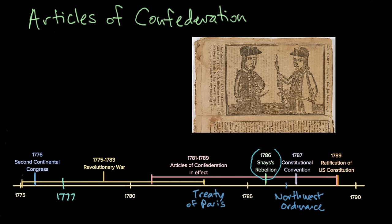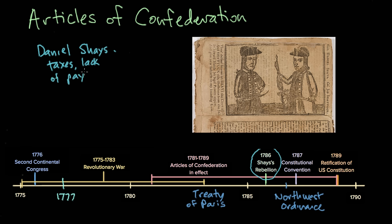We had just gotten out of the Revolutionary War and a lot of the people who had fought in the Revolutionary War still hadn't gotten payment for their duty. They also were experiencing really high state taxes. Daniel Shays and these farmers are very upset and they start a rebellion. But Congress had no ability to levy or collect taxes, so they had no ability to actually pay back their farmers. They also didn't have any money to create a military. Each state had their own militia, but the United States as a whole did not have a military to suppress this rebellion. On both ends, we are in a really bad situation politically.